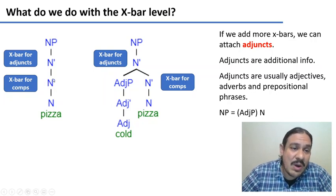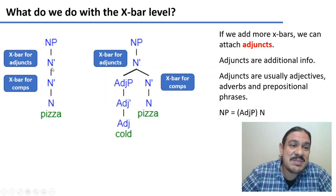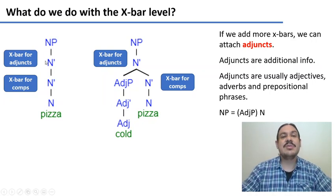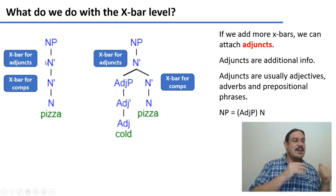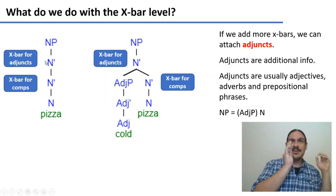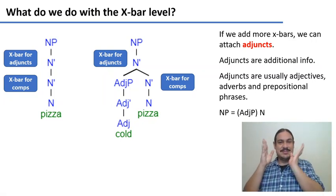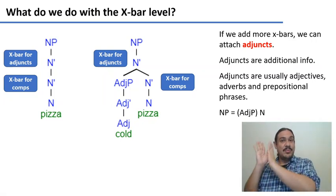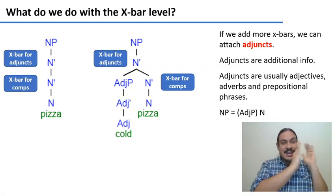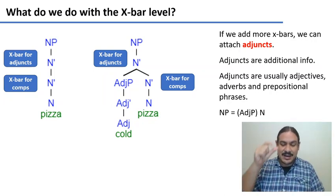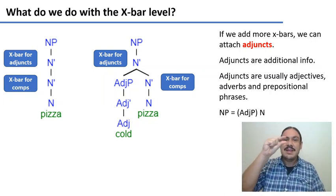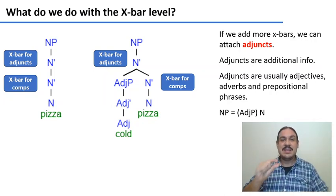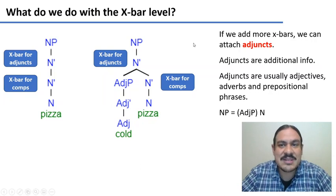We're usually only going to have one complement, but we can have as many X-bars for adjuncts as we need, because you could have a 'cold, delicious, incredible pizza.' So you can have a lot of adjectives lined up, and we're going to have as many X-bars for adjuncts as needed to fit all of those adjectives.